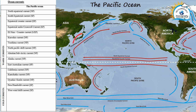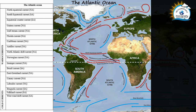Coming to the cold currents in the Pacific, there is the California current and the Kamchatka current — both are cold currents in the North Pacific. Another famous cold current in the South Pacific is the Peru current, also called the Humboldt current. Lastly, the West Wind Drift is a major cold current common to all three oceans — Pacific, Atlantic, and Indian. That covers the major warm and cold currents of the Pacific Ocean.